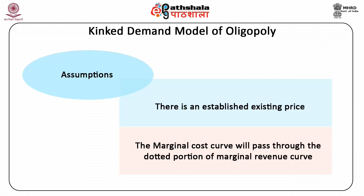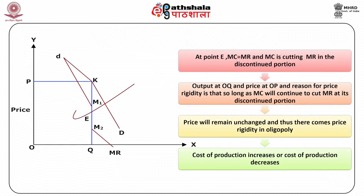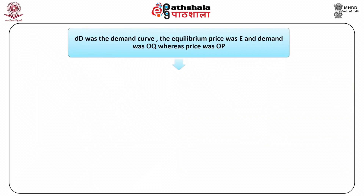According to Paul Sweezy, the demand curve in oligopoly is not continuous but kinked. Similarly, the marginal revenue curve is also discontinuous, shown by the dotted line. In the figure, at point E, MC equals MR and MC is cutting MR in the discontinuity, thereby fixing output at OQ and price at OP. The reason for price rigidity is that so long as MC continues to cut MR at its discontinuous portion, price will remain unchanged. This scenario happens even if cost of production increases or decreases.